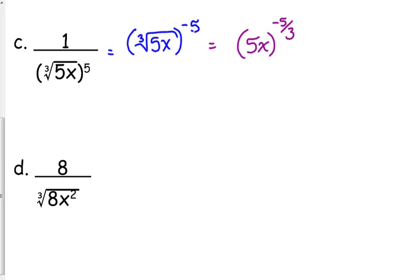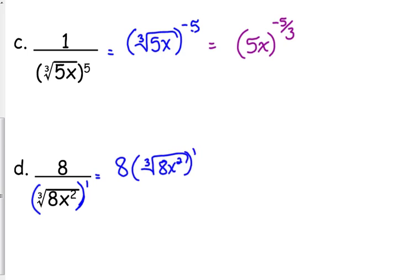This last one is 8 over the cube root of 8X squared, so we've got a couple more different things going on. That squared is only on the X, so it's helpful to put parentheses around that and note a first power, so it's clear that's not 8X to the two-thirds — it is 8X squared to the one-third. If we move that up, it joins the 8. So we've got 8X squared to the negative one-third.